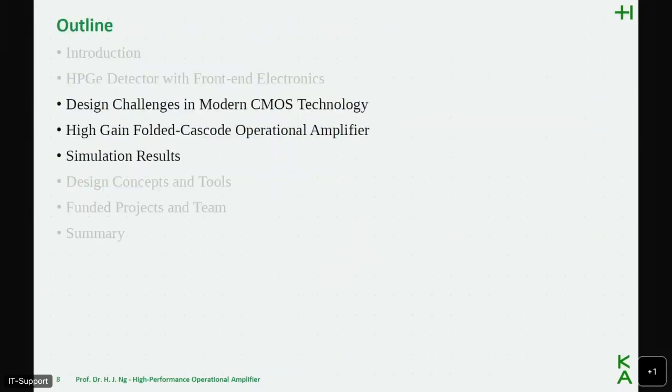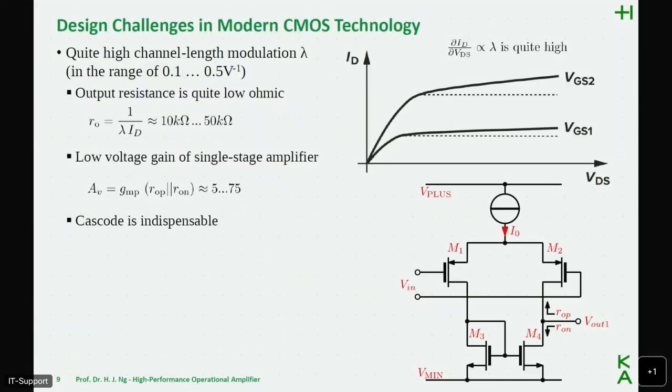Now we go through to the design challenges in modern CMOS technology. As we know, in modern technology nodes, let's say, below 180 nanometer, the channel length modulation is quite high, so it is in the range of 0.1 to 0.5 per volt. So it means, more or less, if we want to use a transistor as an ideal current source, we won't have it. So we will have a very huge output resistance. The output resistance is not really high ohmic. Typically, we get an output resistance in the range of 10 kilo ohm to 50 kilo ohm. So if we want to use the transistor as an active load in an amplifier, we can typically achieve an amplification or a gain of 5 to 75. Not really that much. So this is due to the channel length modulation. You can, of course, play a little bit with the length of the transistor, but you can probably not optimize the gain by that much. That's why, in a typical design, you need the cascode technique to boost the gain.